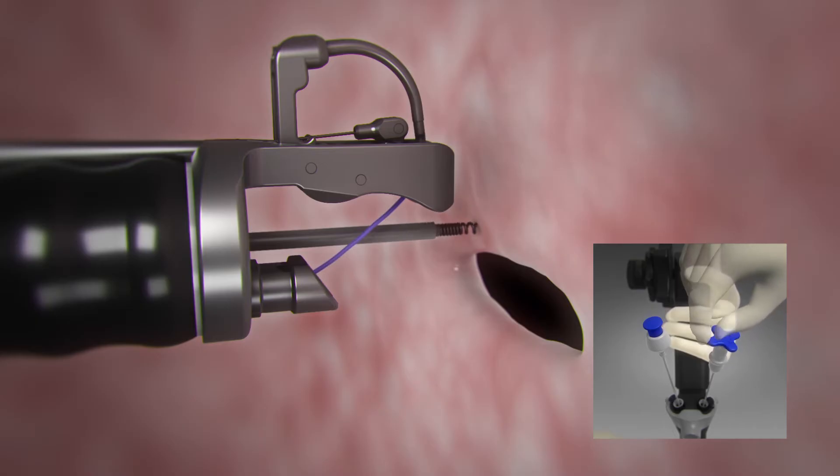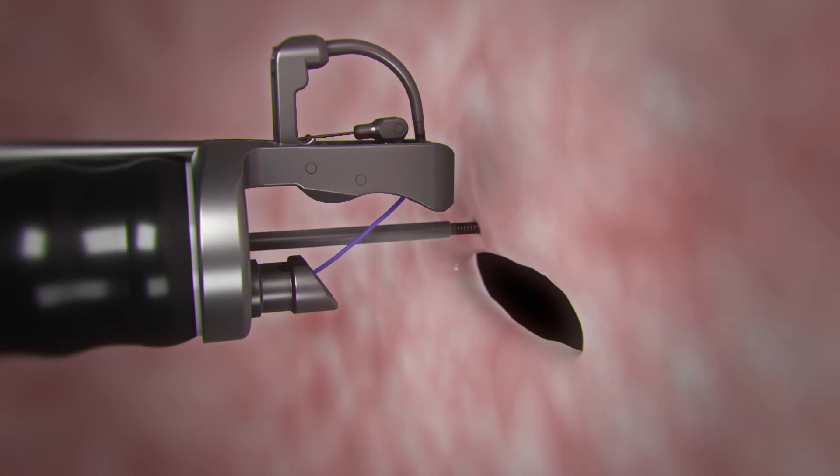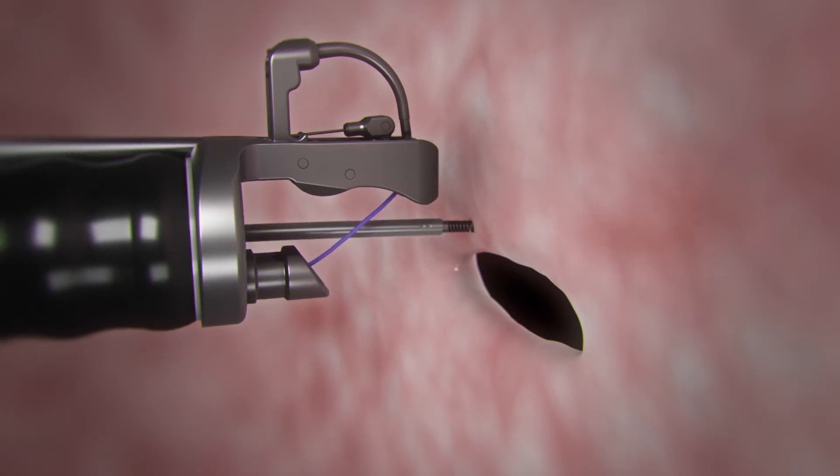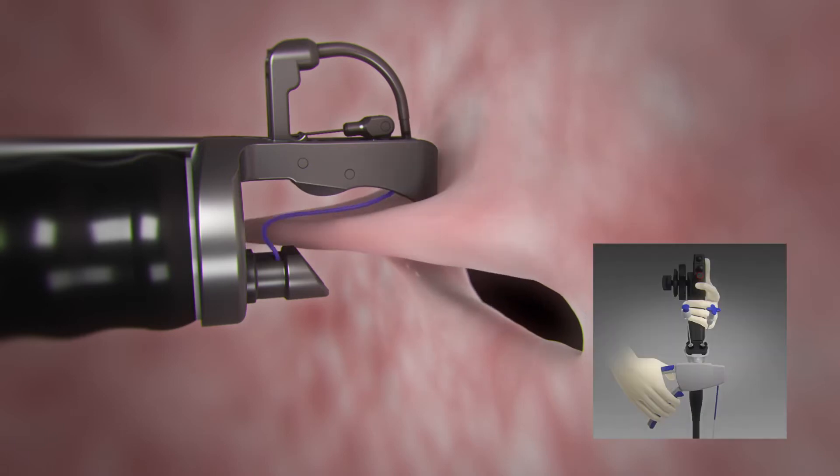Using forward pressure, turn tissue helix knob in the clockwise direction to capture tissue. To ensure a full thickness bite, maneuver scope left so that the helix is right of the needle guard. Pull tissue until it reaches the scope.